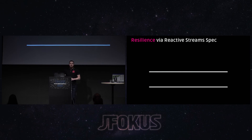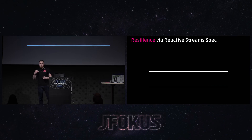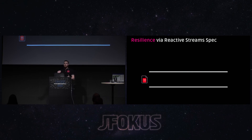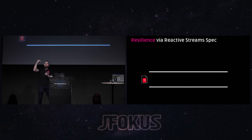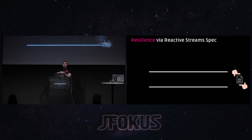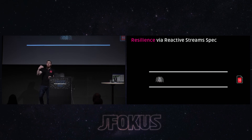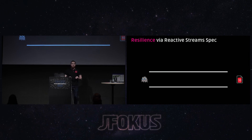What about stability? RSocket is essentially the reactive streams specification as a network protocol. We have built-in real back pressure: if your client says it wants five messages, that request gets translated as a frame, sent over the wire, and decoded back as a request for exactly five elements. Your producer will be able to produce exactly the number of elements requested, which is super powerful.